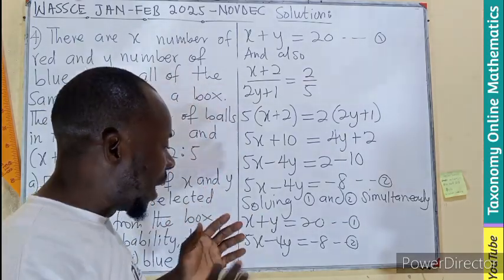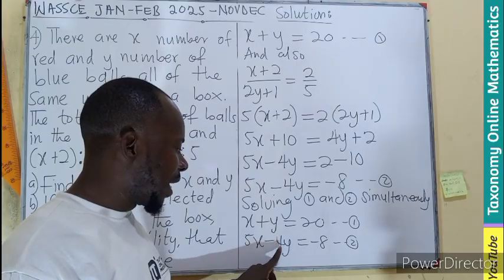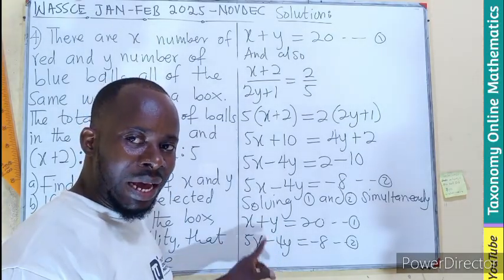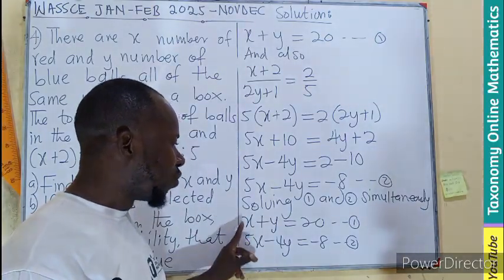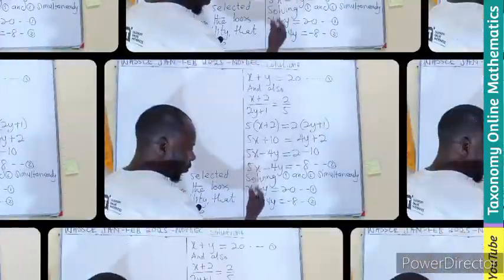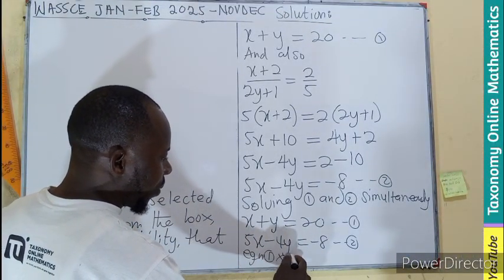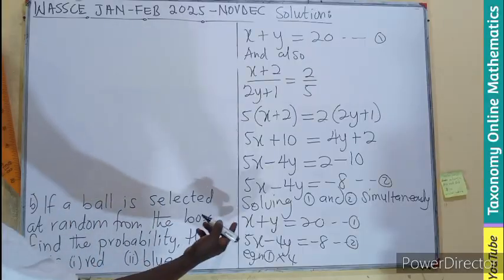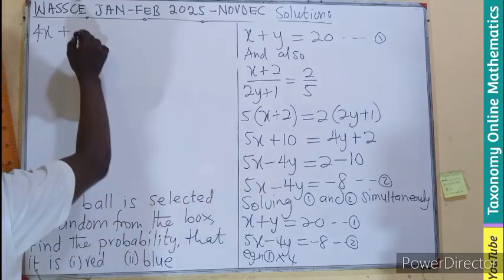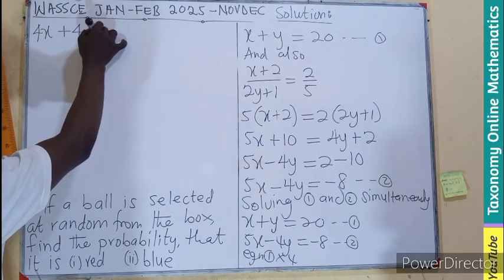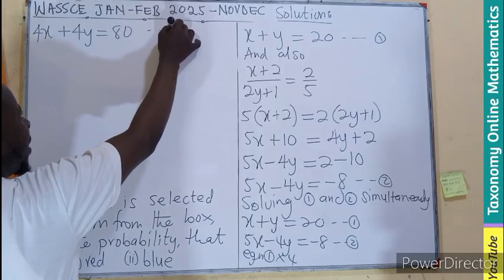In this case, I would like to eliminate. So I'll multiply equation 1 by 4, so that I can eliminate Y easily. You can also eliminate X by using 5 to multiply equation 1. So equation 1 times 4 gives: 4X plus 4Y equals 80. Let's call this equation 3.